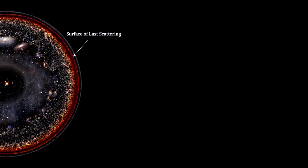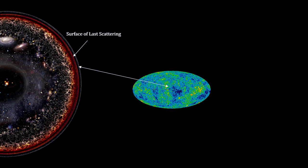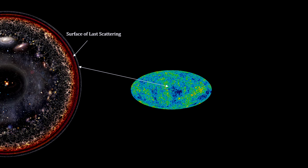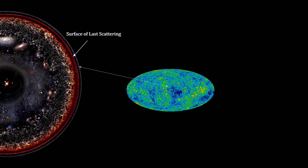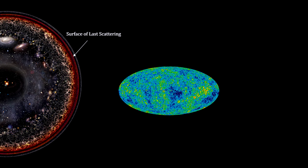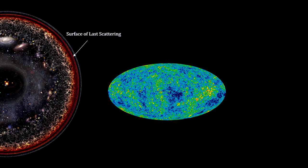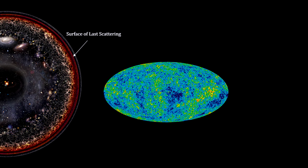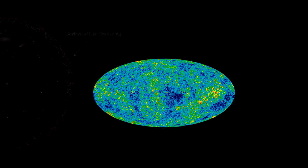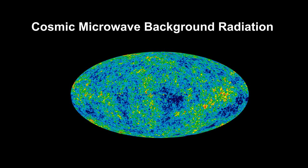At that time, all the photons in the universe were released. These photons are still with us today. We see them all across the sky in tremendous numbers. They are the Cosmic Microwave Background Photons — CMB — and they tell us a great deal about the past, present, and future of the universe.